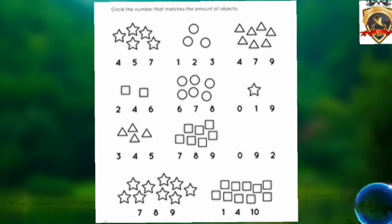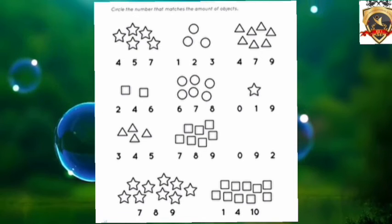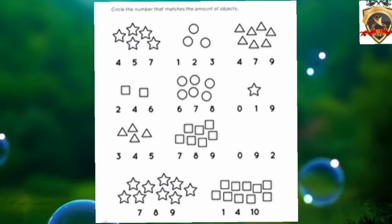Next one is triangles. 1, 2, 3, 4, 5, 6, 7. Circle the number 7.